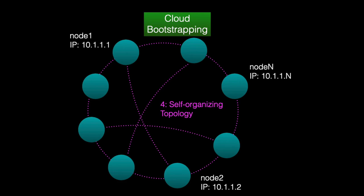Once more nodes start joining the network, EVO self-organizes them into a scalable, structured P2P topology. This allows nodes belonging to the same VPN to communicate with each other regardless of whether they have a direct link. For example, node 1 and node 2 can communicate directly through a tunnel, whereas node 1 and node N connect indirectly through a hop in the overlay.